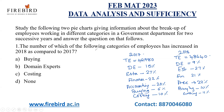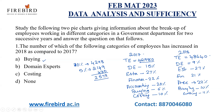The question asks: which of the following categories of employees has increased in 2018 compared to 2017? Let us check buying first. In buying, 6% of employees were working in 2017. 10% of 42,980 is 4,298; 5% is 2,149; and 1% is approximately 430. So 6% gives us about 2,579 employees in buying in 2017. In 2018, buying is 10% of 48,600, which is around 4,864. Since 4,864 is more than 2,579, buying has increased. So we choose buying as an option.